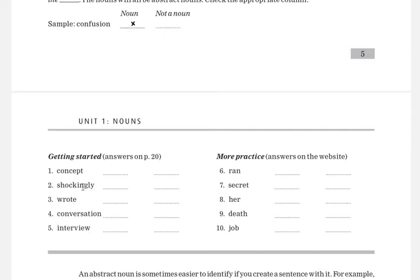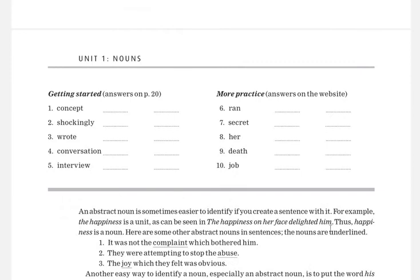In this way you have to do this exercise. Some more examples are given here. An abstract noun is sometimes easier to identify if you create a sentence with it. When doing English grammar, you can make a sentence. If the word is happiness, you can say the happiness on her face delighted him.